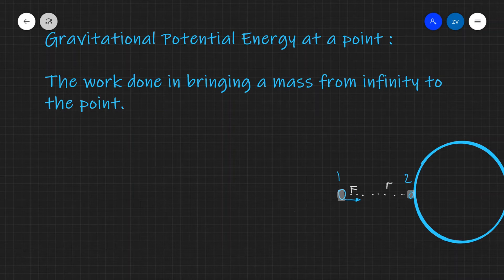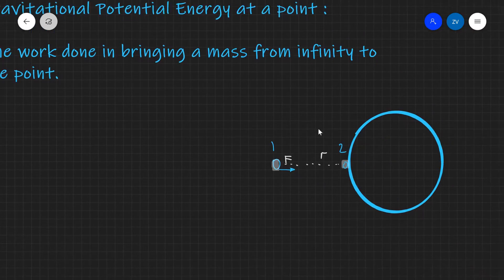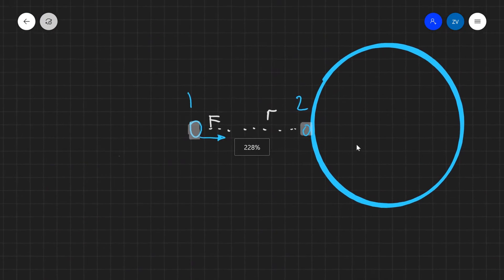Our first job would be to actually define gravitational potential energy at a point in space. What do we mean by this? Well, let's have a look at an example.